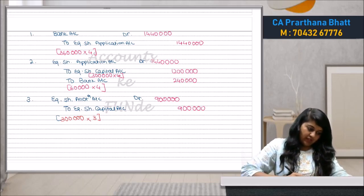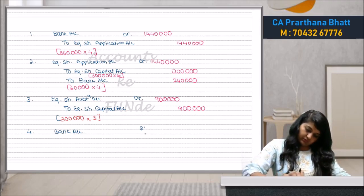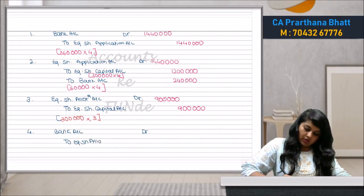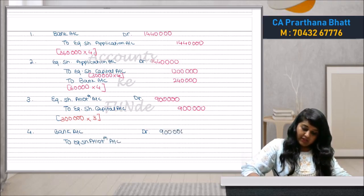The bank receipt entry for allotment: Bank Account debit to Equity Share Allotment Account. Amount is the same ₹9,00,000, as we have received the full amount called on allotment.